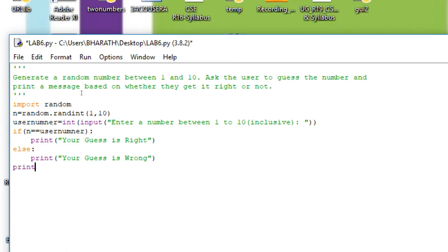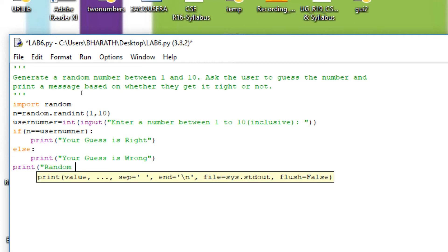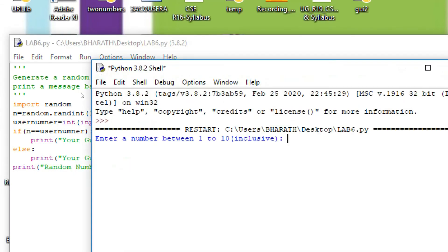For the print, print random number. Random number is stored in n variable. Now see the execution. I entered 4. Your guess is wrong. Actually, the random number is 5.